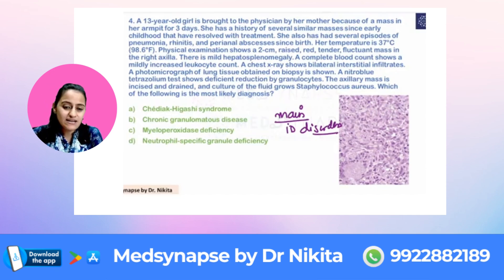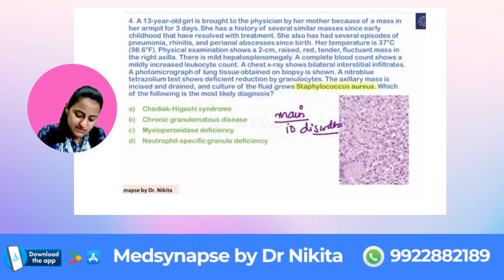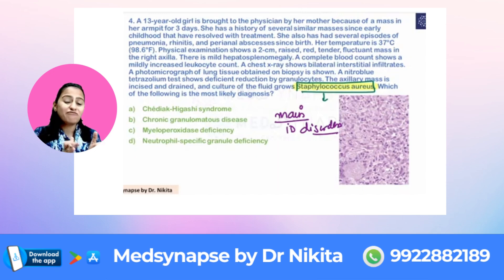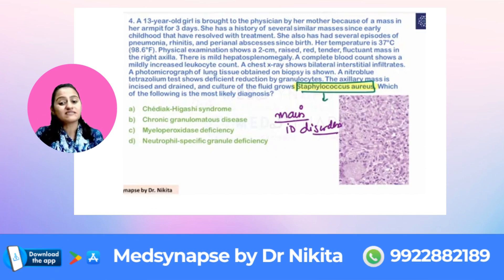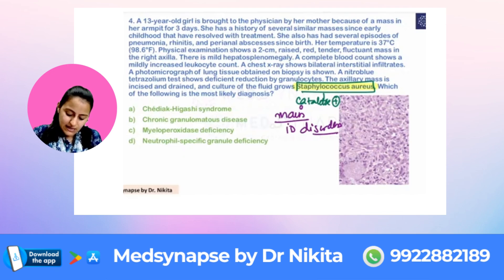Is it Chediak-Higashi, is it Chronic Granulomatous Disease, or something else? Let's look at the question. The last line asks for the most likely diagnosis — axillary abscess, culture shows Staph aureus. When an immunodeficiency disorder question mentions Staph aureus, remember the mnemonic from microbiology: 'Staphie Cat' — the cat is catalase positive, Staphie is Staph aureus. So this is a catalase-positive infection, and I start thinking of Chronic Granulomatous Disease.